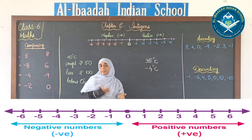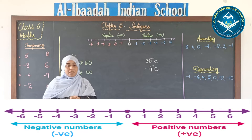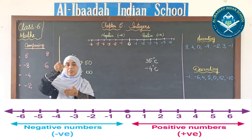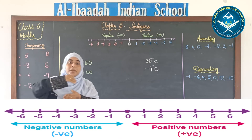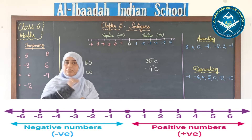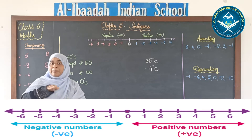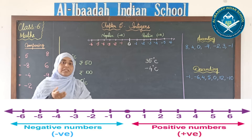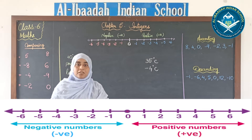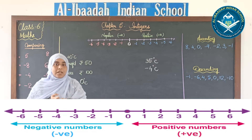One example of where we use negative and positive integers is temperature. Another example is sea level. Height above sea level — like height of mountains, say 2000 meters above sea level — uses positive integers. Depth below sea level, say 1000 meters below sea level, uses negative integers — we write it as minus 1000 meters.